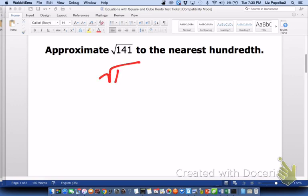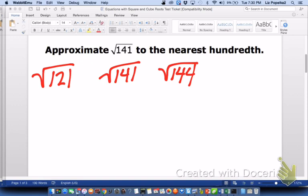I've got my radical 141 here. I know that the perfect square that is bigger than 141 is 144, and the perfect square that is smaller than 141 is 121. So because the square root of 121 is 11 and the square root of 144 is 12, I know that the square root of 141 falls somewhere in between 11 and 12.